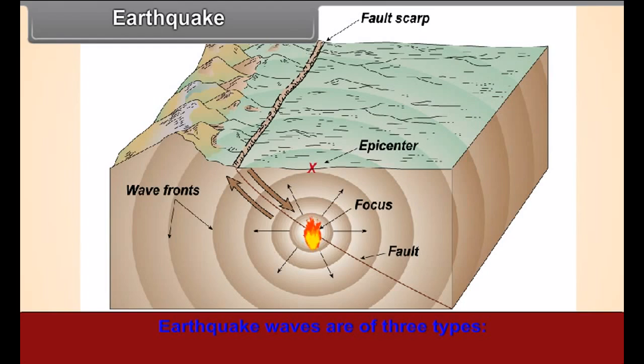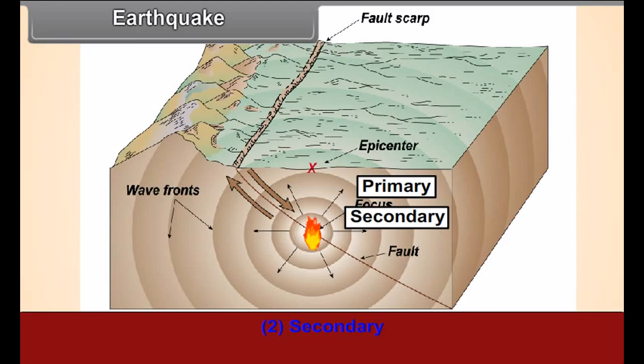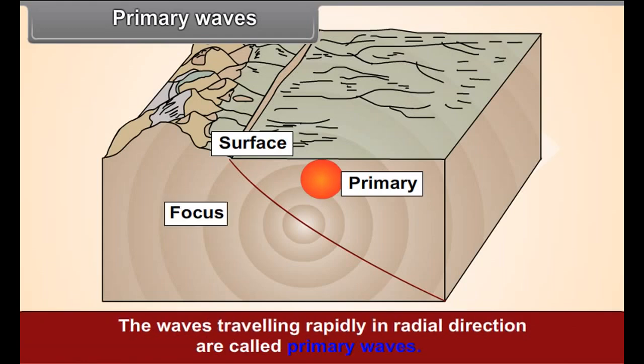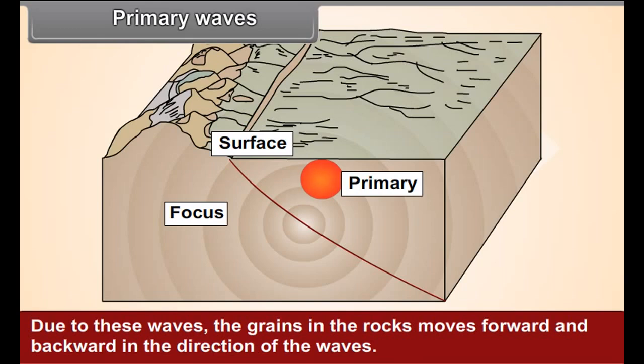Earthquake waves are of three types: Primary, secondary and surface waves. Primary waves - These are the waves first to reach earth's surface immediately after the energy is released in the interior. The waves traveling rapidly in radial direction are called primary waves. Due to these waves, the grains in the rocks move forward and backward in the direction of the waves.